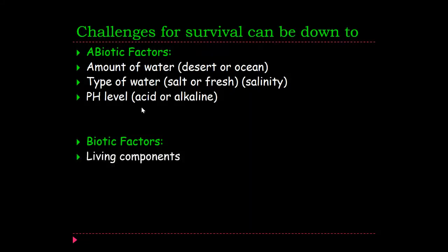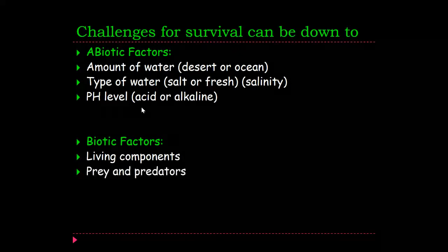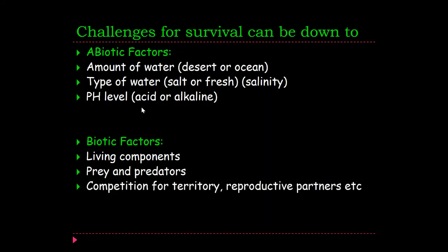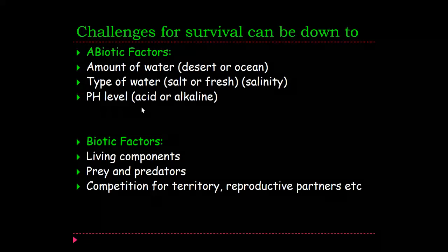Biotic factors are the living components. So prey and predators obviously have a big factor in the survival of an organism. It needs to keep away from its predators and it needs to catch its prey in order to survive and thrive. Competition for territory — that could be within a species or between other species. There's a whole range of issues and challenges that each organism faces from that perspective.